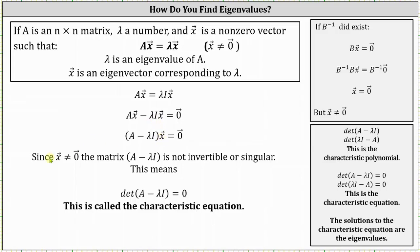From here, since vector x can't equal the zero vector, the matrix that is the difference of matrix A and lambda times the identity matrix is singular or not invertible, and therefore the determinant of the difference of matrix A and lambda times the identity matrix must equal zero. This equation is called the characteristic equation. The solutions to this equation will give us the eigenvalues of matrix A.